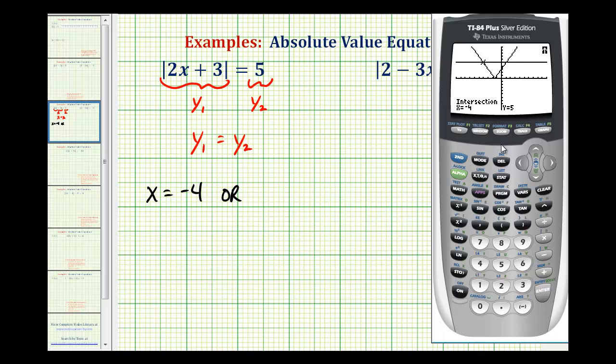So we'll do the same thing. We'll press second trace option 5, move the cursor close to the second point of intersection, and then enter, enter, enter, and now we have x equals 1.